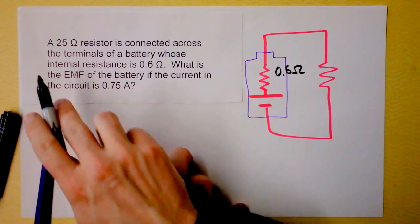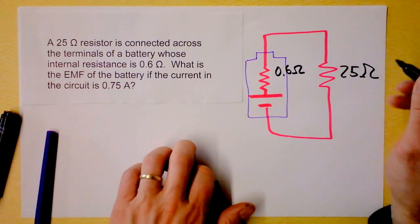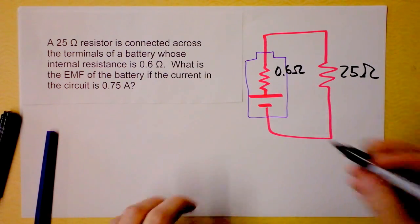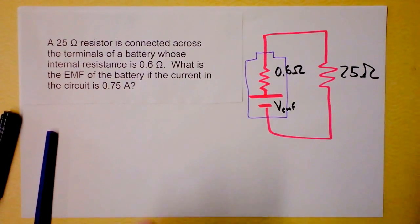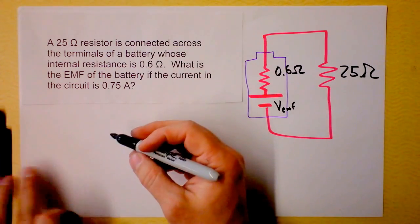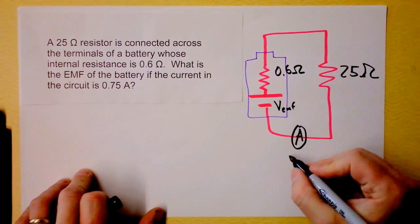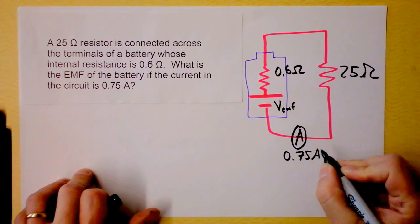They're saying the internal resistance is 0.6 ohms, and I guess they're saying that there's a 25 ohm resistor over here connected in series to the battery, and they're just asking you what's going on with the EMF. And I'm going to call that the EMF voltage, that's the voltage of the chemical reaction happening inside of the battery. And they're asking for that, and there's an equation, oh yeah, they're giving you the current. They say there's a current sensor here, an ammeter, getting you a current of 0.75 amps.